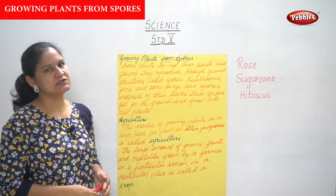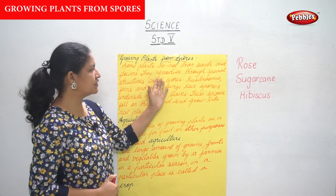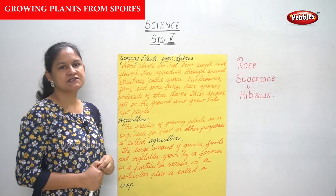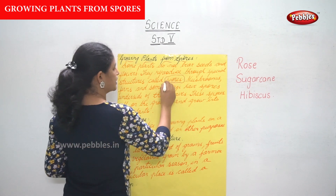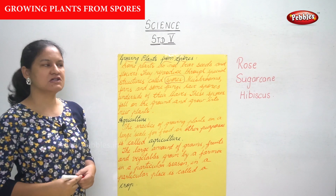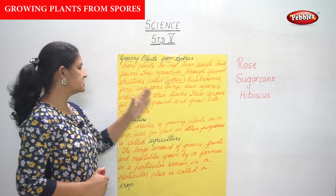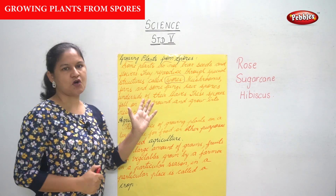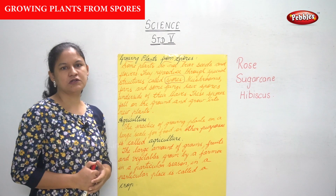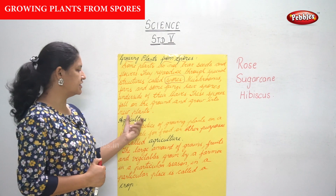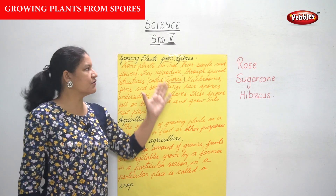Some plants do not bear seeds and flowers. They reproduce through special structures which are called spores. Examples are mushrooms, ferns, and some fungi that have spores on the underside of their leaves. These spores fall on the ground and grow into new plants.